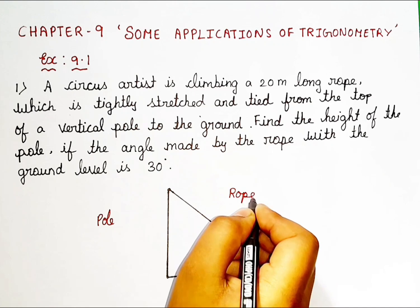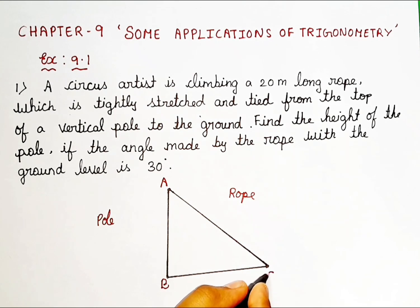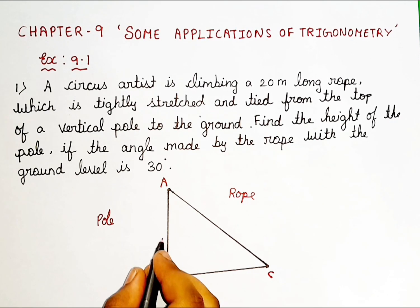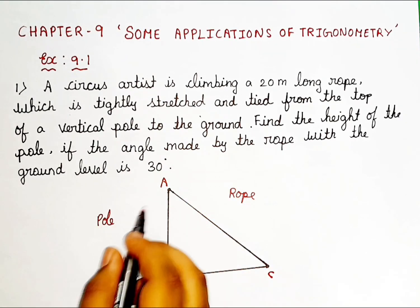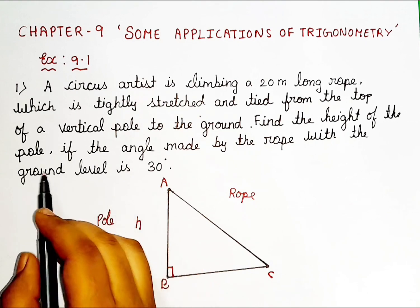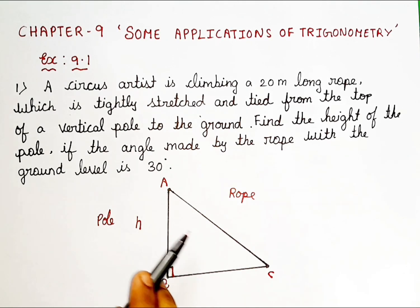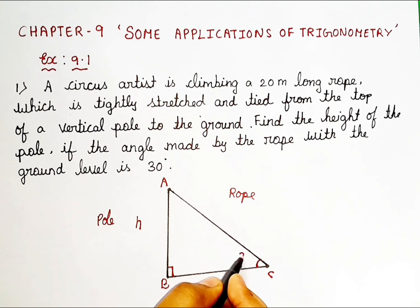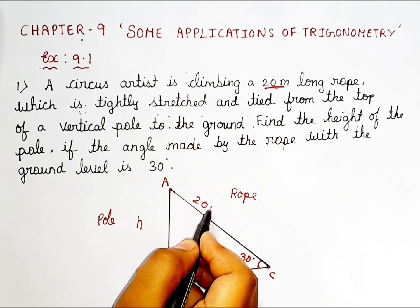Let us name the figure as A, B, and C. This angle is 90 degrees because we have a right angle here. The angle made by the rope with the ground level is 30 degrees. The rope is 20 meters long.